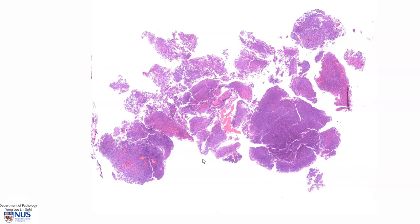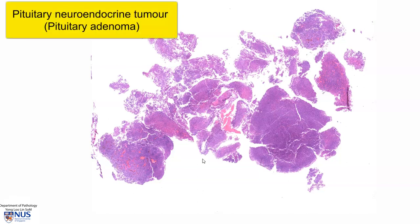This is a virtual microscopy slide of a pituitary neuroendocrine tumor. The older nomenclature for this tumor is pituitary adenoma, so these two terms are interchangeable, with the current term being pituitary neuroendocrine tumor.